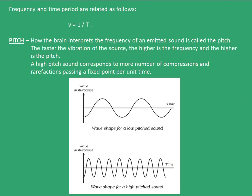What is frequency and time period? The frequency and time period of a sound wave are related by the formula ν = 1/T. Suppose the time period of the sound wave is T seconds. Therefore, the frequency will be 1/T seconds.